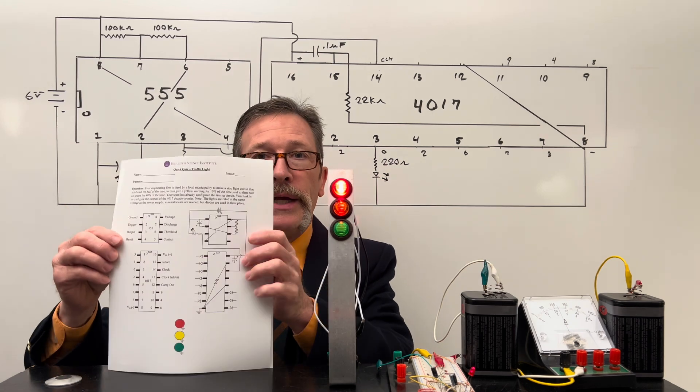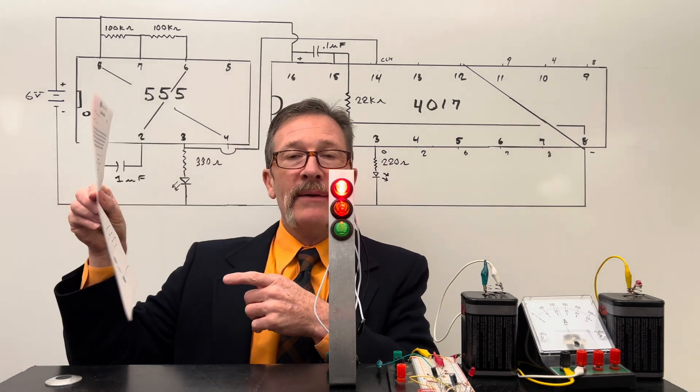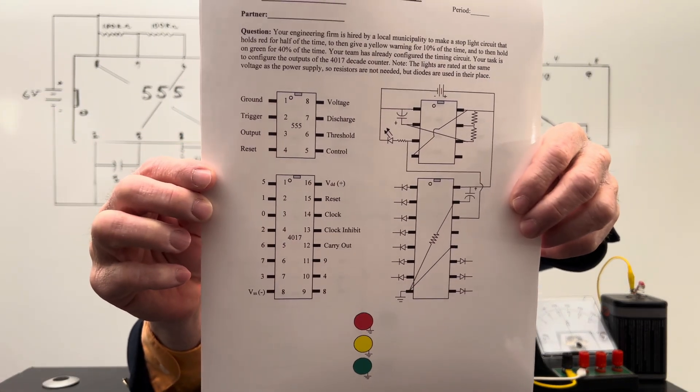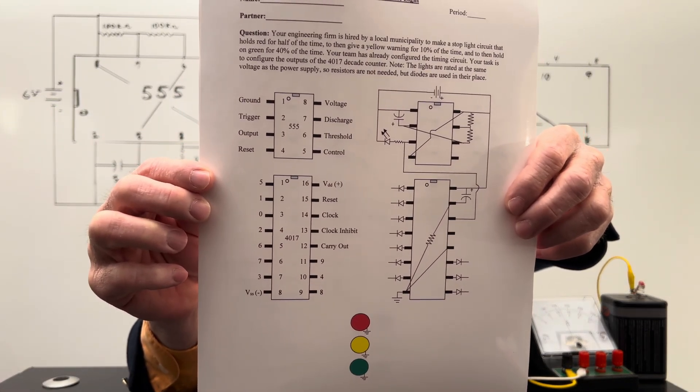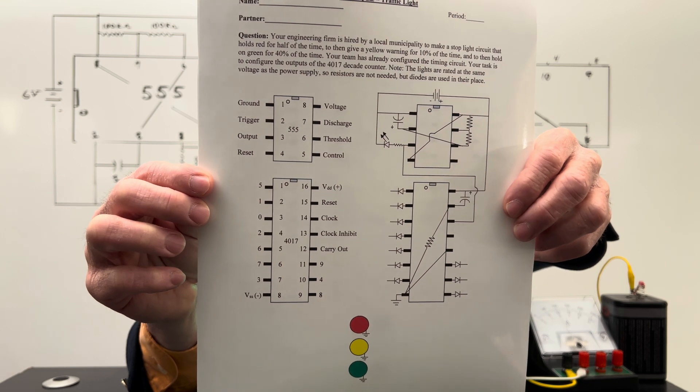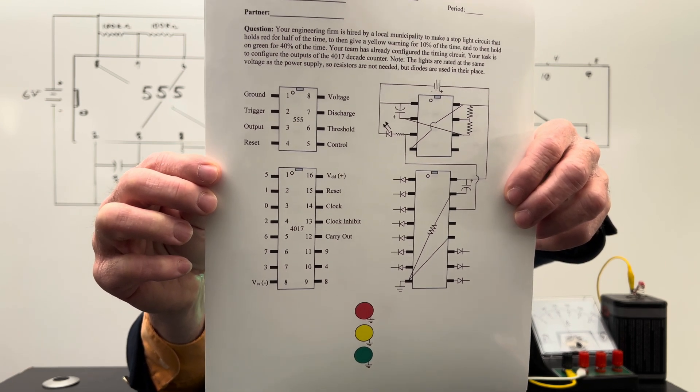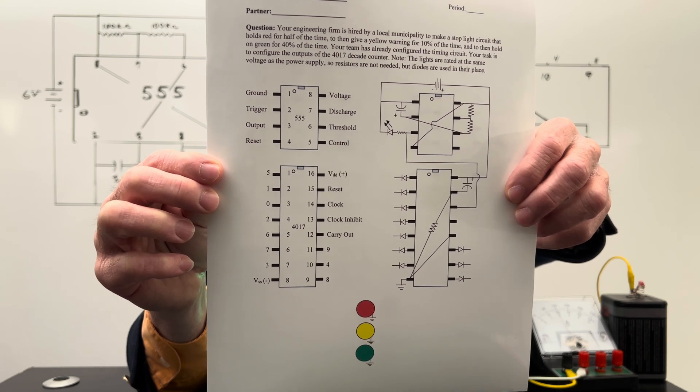I have this written and I'll read this to you in full. It reads, your engineering firm is hired by a local municipality to make a stoplight circuit that holds red for half the time, then to give yellow for 10% of the time, and then to hold on green 40% of the time.